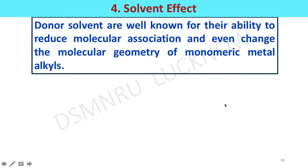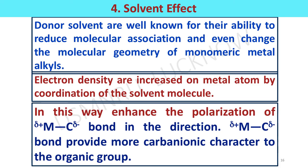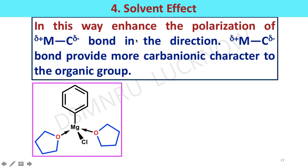Now we will discuss about the effect of solvent on the reactivity of organometallic compounds. Donor solvents like DMSO, ether, or ketones enhance stability by reducing molecular association and even changing the molecular geometry of monomeric metal alkyls. Electron density is increased on the metal atom by coordination of the solvent molecule. This makes a stable complex, completes the octet, and enhances the polarization of the metal-carbon bond, giving more carbanionic character to the organic group.